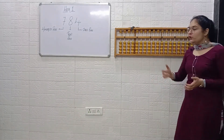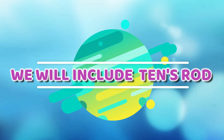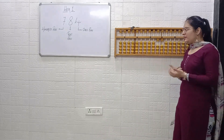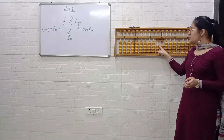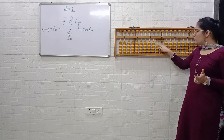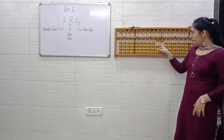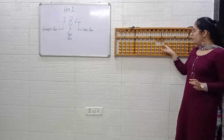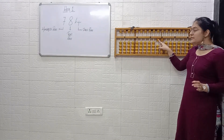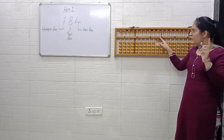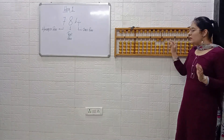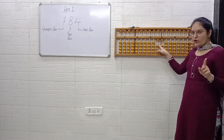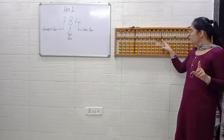Now we will be including the tens rod as well. First we will read the tens place, and then we will read the ones place. Here it is 1 at tens place — keep that 1 in your mind. Move to the ones place — here also it's 1. So we read: 1, 1 — that is 11. It is not 2, because this is the tens rod and this is the ones rod.